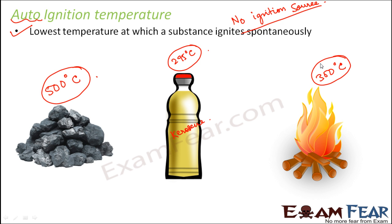And knowing the combustibility of various substances, we can choose each of them for various purposes. For example, in the cylinders used in our kitchen to prepare food — what kind of fuel do we use? Do we use coal? No. We use LPG.